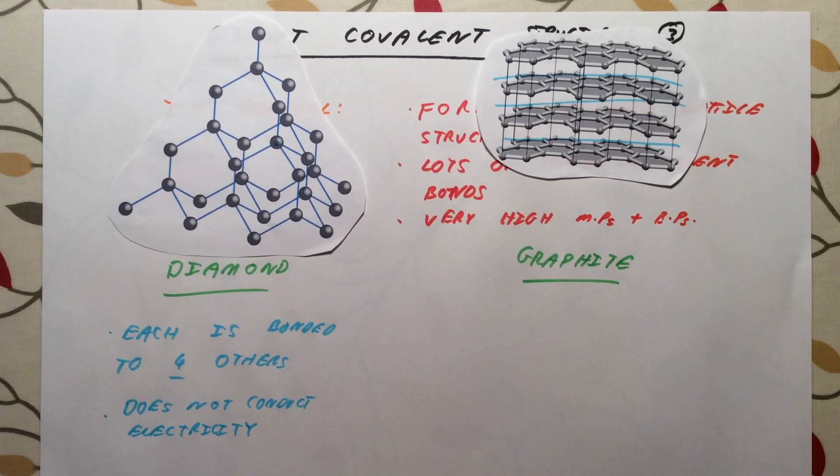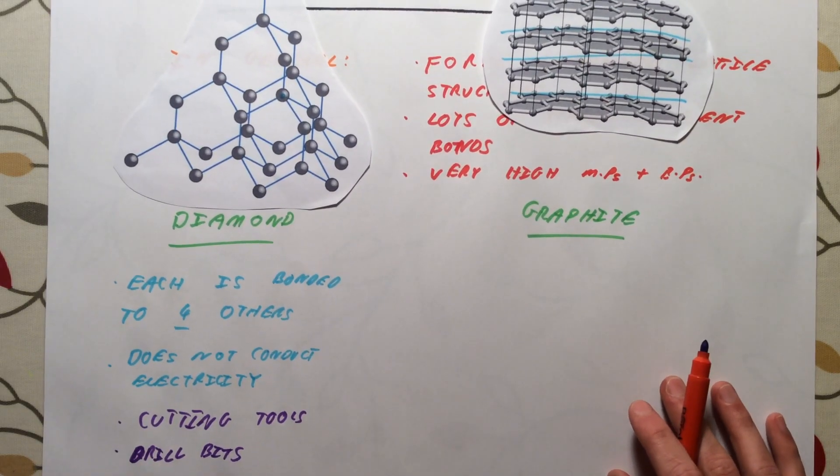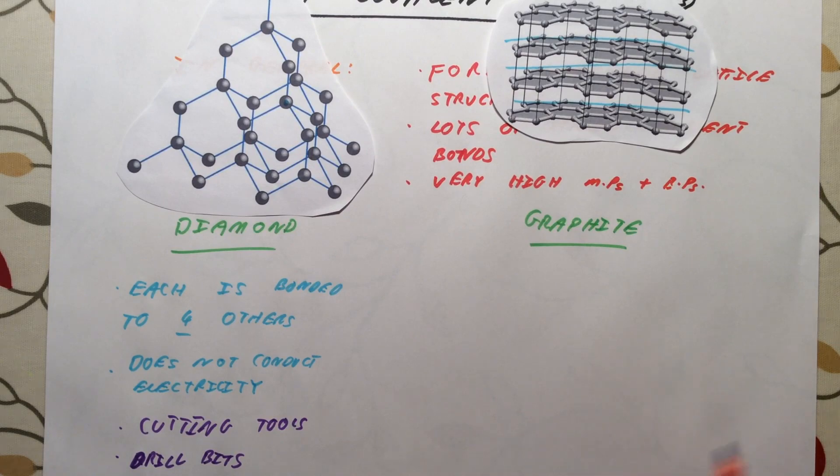Therefore, we use diamonds in cutting tools and things like drill bits, because we need them to be extremely strong and also they're likely to get quite hot, and we don't want the structure to melt.